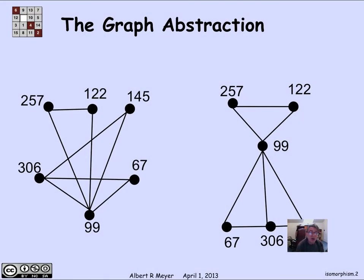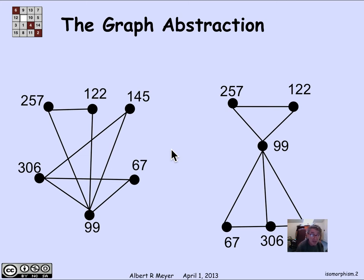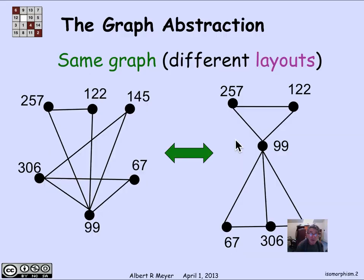This is an example of two different ways of drawing the same graph. Here's a vertex 257, connected directly to 122 and also to 99. If you check, it's exactly the same six vertices and exactly the same eight edges, but they're just drawn differently. So we don't want to confuse a drawing of a graph with the graph itself. The graph consists of just the set of nodes and the set of edges, and both diagrams give you the same set of nodes and edges — same graph, different layouts.